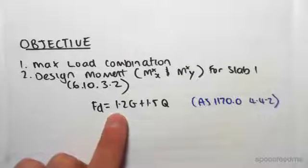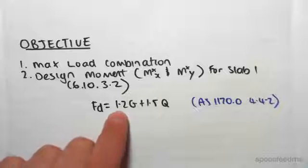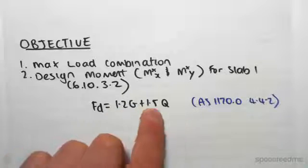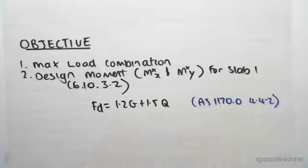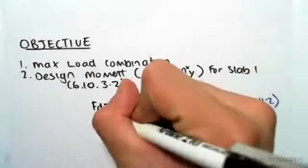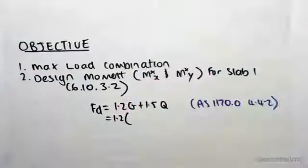Now we're going to be doing an area load of 1.2G plus 1.5Q. This is straight from the standard AS1170.0, clause 4.4.2. So we've found in the previous videos that the gravity load on our slab was 7.75 kPa.